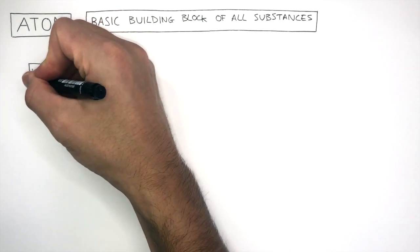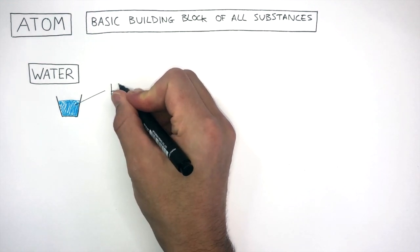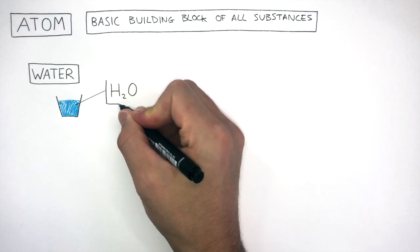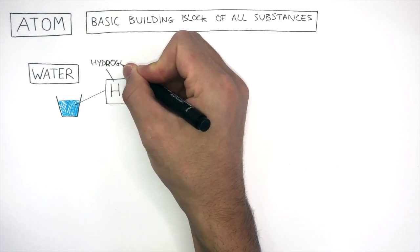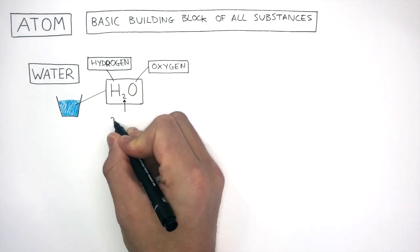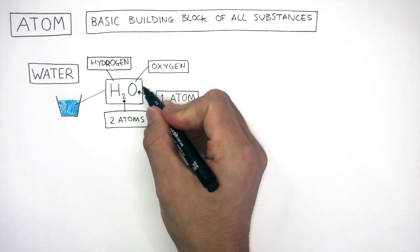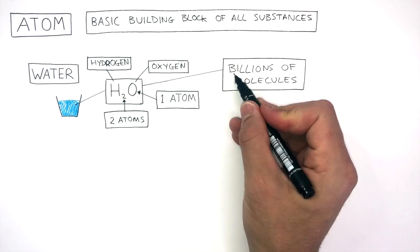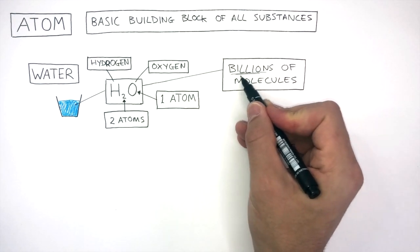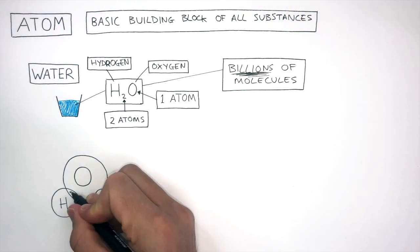Water is a resource that we use every day, and the molecular formula of one molecule is H2O. One molecule of water contains two elements, hydrogen and oxygen. There are two atoms of hydrogen and one atom of oxygen. And in this glass of water, there are billions and billions of molecules. And here is one molecule of water.